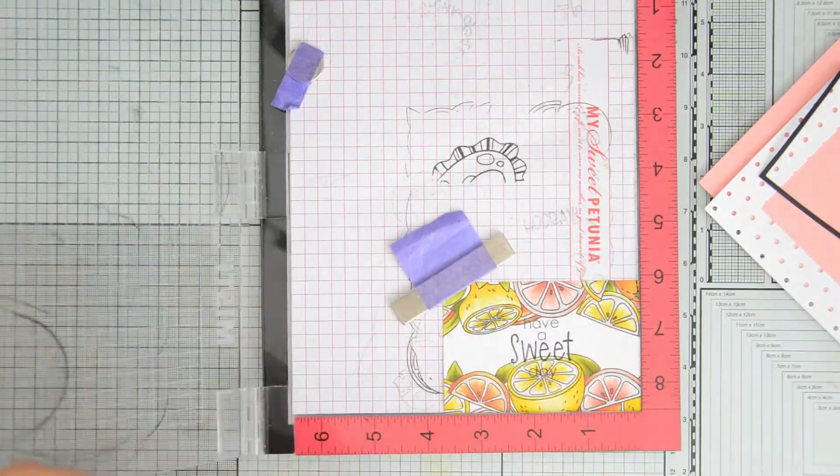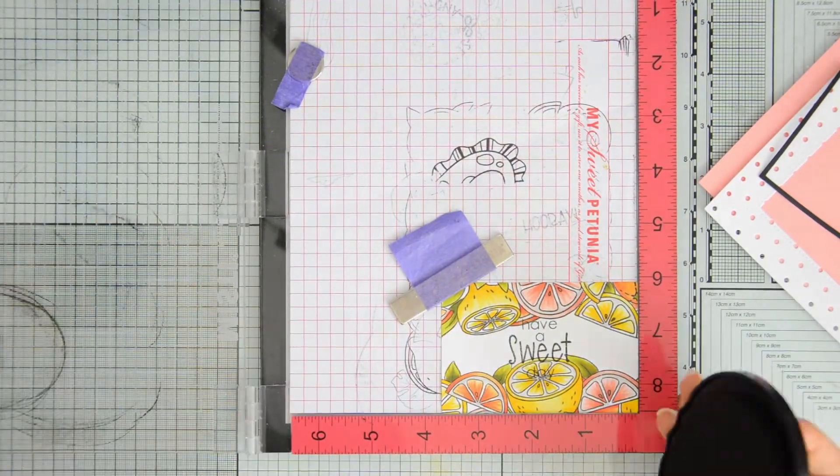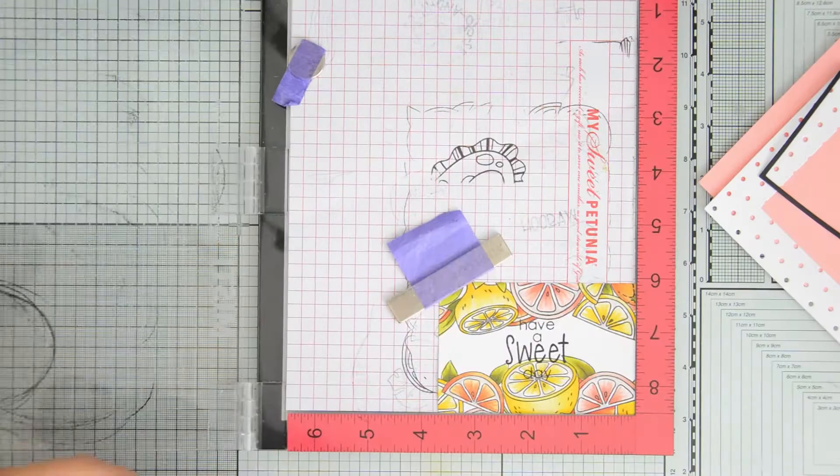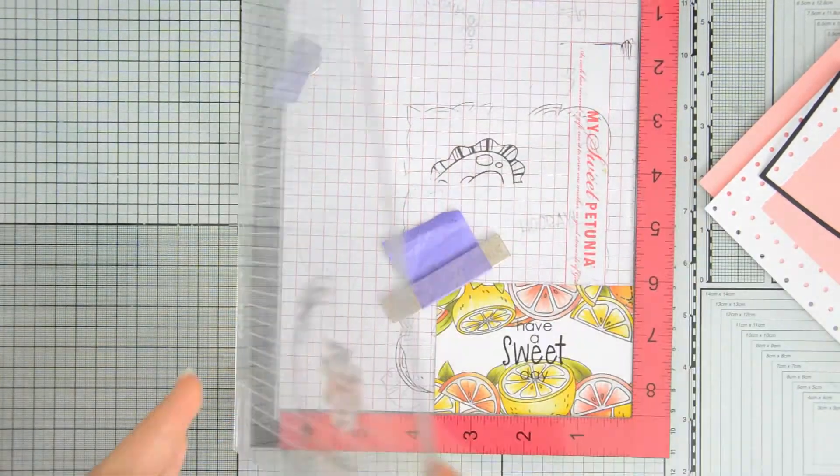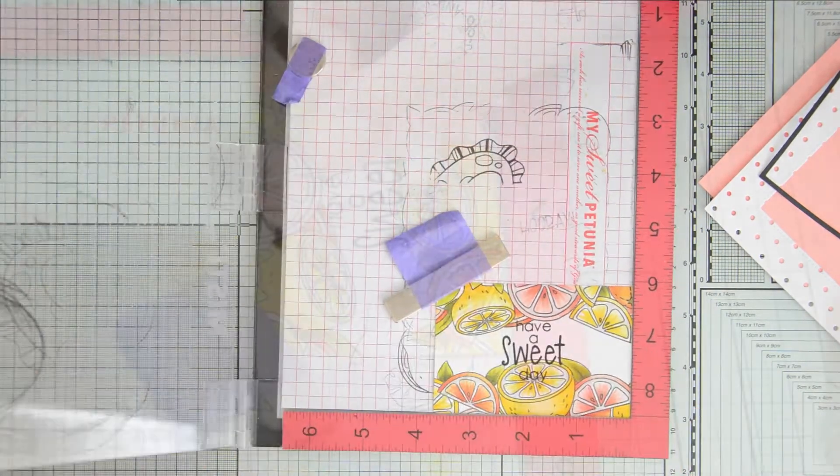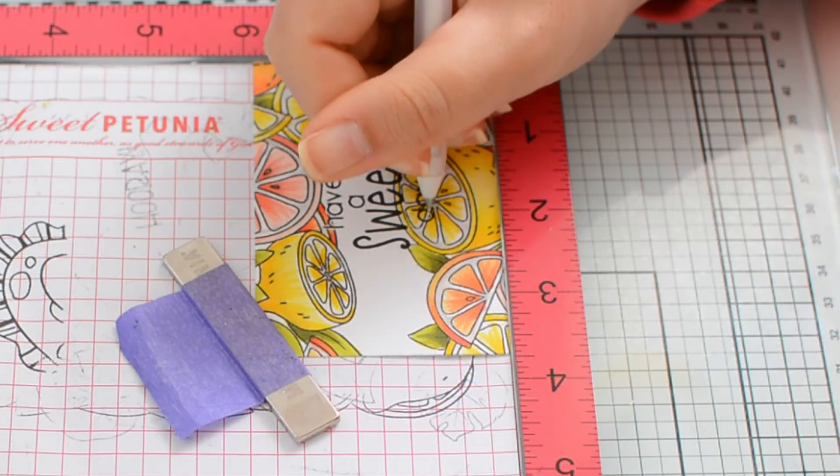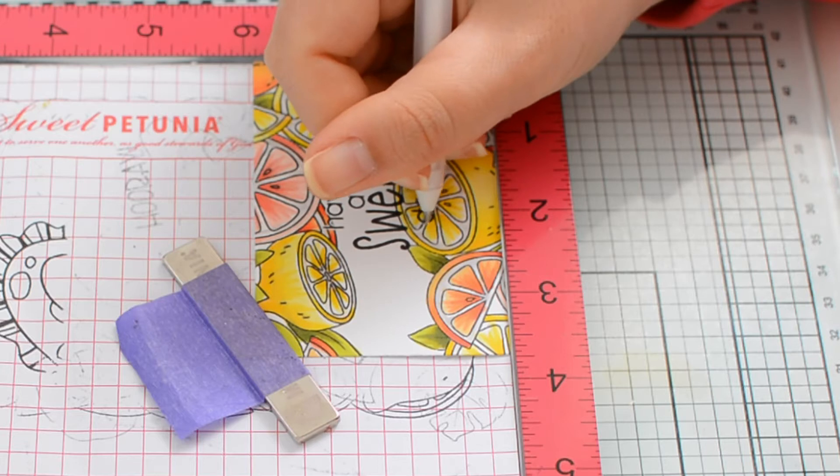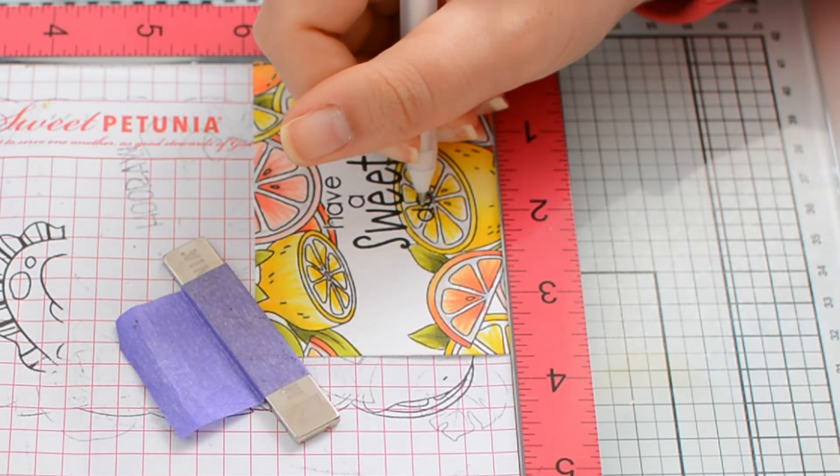Before gluing everything together, I stamped my sentiment directly on my image. This is part of the citrus trimming stamp set and it makes for the perfect all occasion card. You can personalize this by writing a different message inside the card, so it can be a birthday card, a hello card, whatever you need.